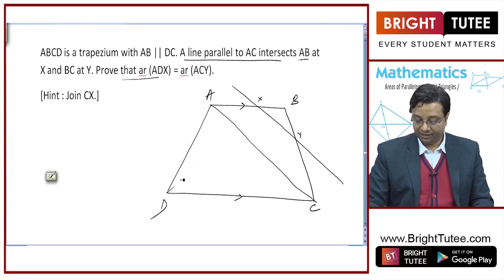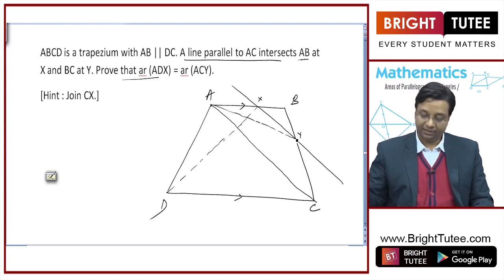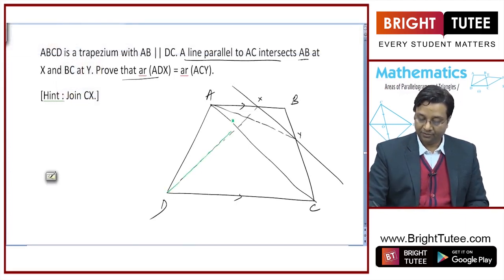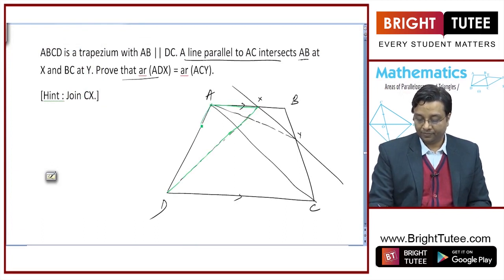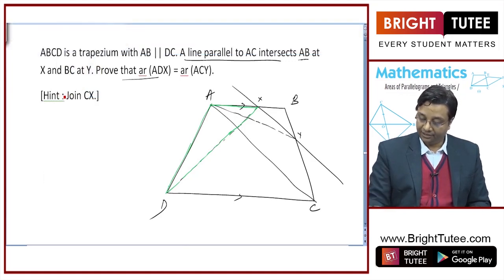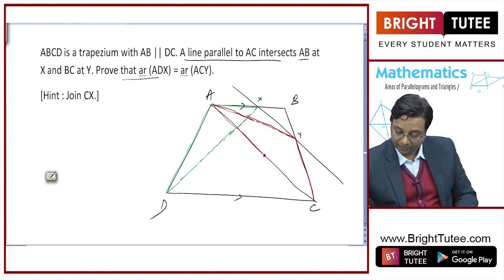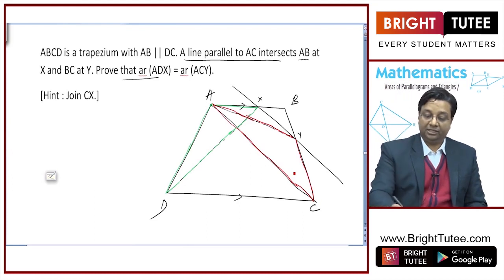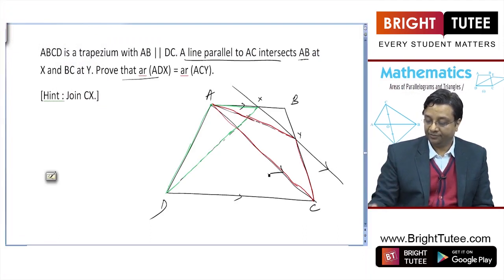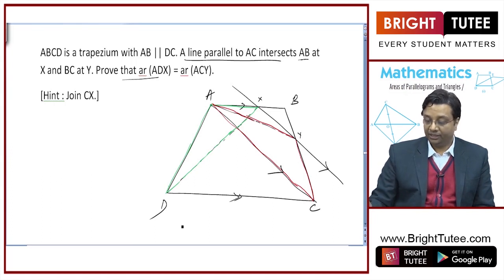So what is triangle ADX? This area here — area ADX. And what is triangle ACY? If I join these, this is ACY. Let me show it using a different color. One triangle is ADX and the other triangle is ACY. What is given is that this line XY is parallel to AC, and also AB is parallel to DC.